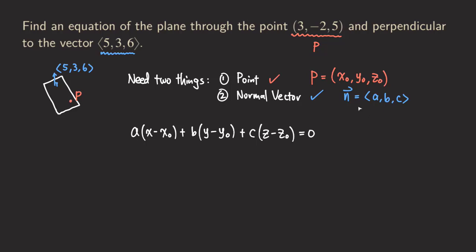And so now abc would be 5, 3, and 6. So we are going to have the 5, and then x minus x₀, x₀ is 3. So we just get the 3 over here. And then the next one is b, the b is 3 over here.